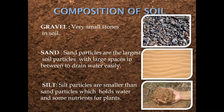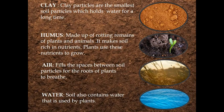Silt — silt particles are smaller than sand particles. Silt holds water as well as some nutrients for plants to grow. Clay — clay particles are the smallest soil particles. They hold water for a long time and they have small spaces in between.